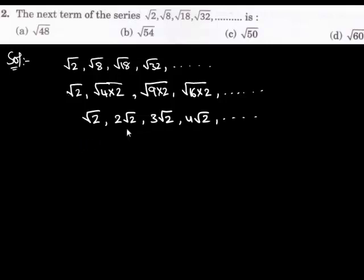Clearly, the difference between the term and its preceding term is constant. Let's look at this: 2 root 2 minus root 2 gives us root 2. Similarly, we take the term 3 root 2 and its preceding term 2 root 2, so the difference becomes root 2.